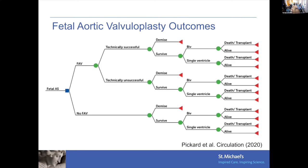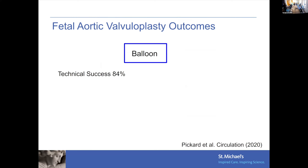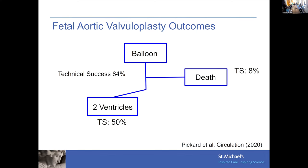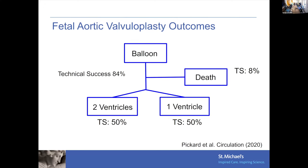Looking at all the different outcomes — not having had a balloon dilation versus technically successful balloon dilation versus technically unsuccessful — to summarize: following balloon dilation of the aortic valve, technically successful within a tertiary care setting in 85 percent, with fetal demise in about 8 percent of fetuses. Of those technically successful, about 50 percent will develop a two-ventricle circulation, while 50 percent continue on to a single ventricle.